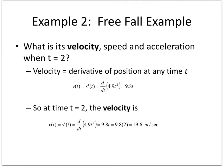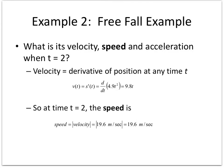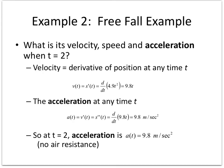To find speed, take the absolute value of velocity — that only matters if you end up with a negative velocity. For acceleration, I take the second derivative. The derivative of 9.8t is just 9.8, and I plug in to get my acceleration. And again, this is a perfect world with no air resistance.